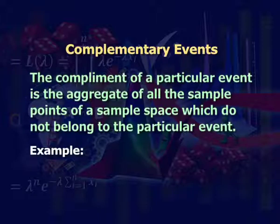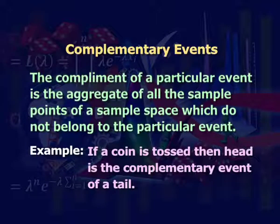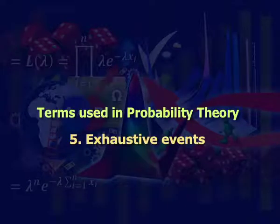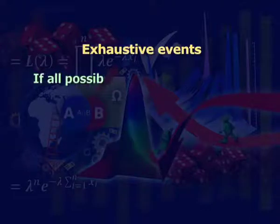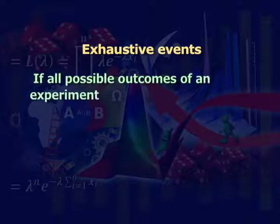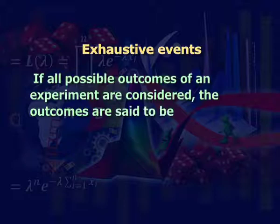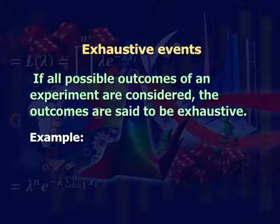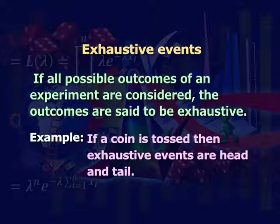For example, if a coin is tossed, then head is the complementary event of tail. Fifth: exhaustive events. If all possible outcomes of an experiment are considered, the outcomes are said to be exhaustive. For example, if a coin is tossed, then exhaustive events are head and tail.